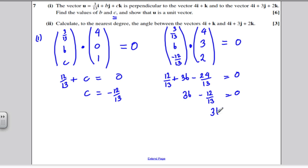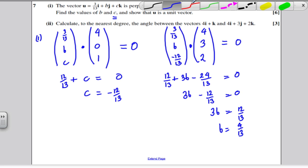So 3B must be 12 over 13. And dividing by 3, I'm going to get that B must equal 4/13. So I've found C and B as they've asked.